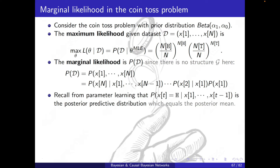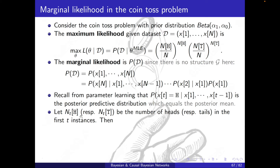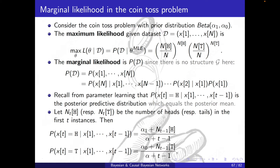Recall from parameter learning that p(x_t = something | previous instances) is the posterior predictive distribution, which under the Dirichlet distribution equals the posterior mean. If I define n_t(h) as the number of heads in the first t instances, then this term equals (alpha_1 + n_t(h) - 1) divided by (alpha + t - 1), and similarly for tails.